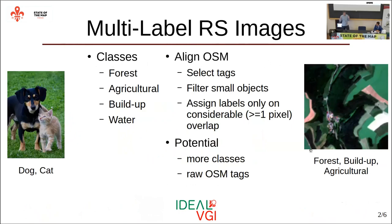In the project, they worked on multi-label remote sensing images. On this side you can see a simple multi-label image showing a dog and a cat. If we look at larger areas in remote sensing images rather than singular pixels, we can assign multiple labels to one image — for example, forest, built-up area, and agricultural area. They classified OSM into different classes, aligned the OSM tags to these classes, and generated labels for remote sensing.